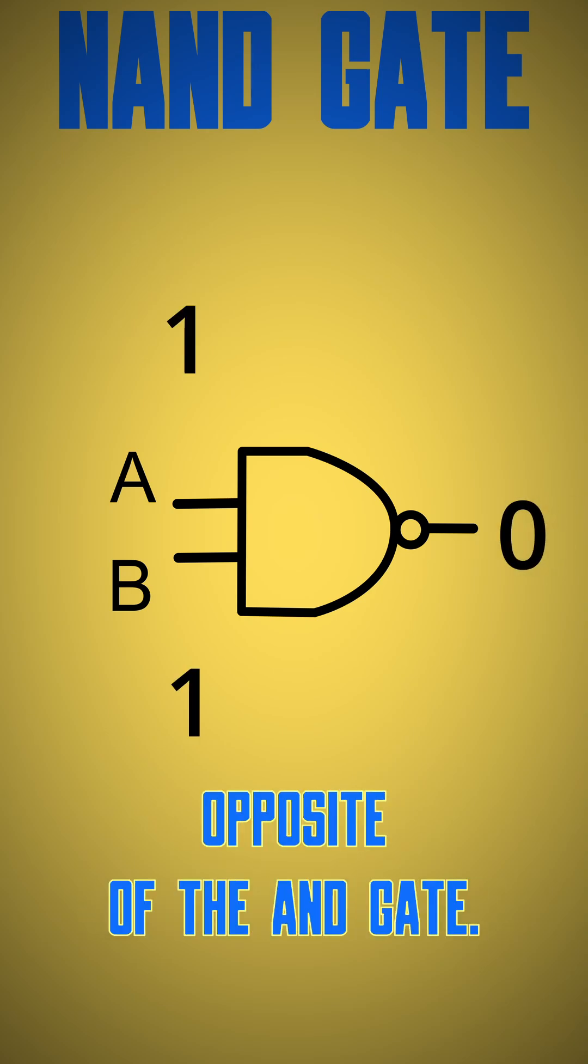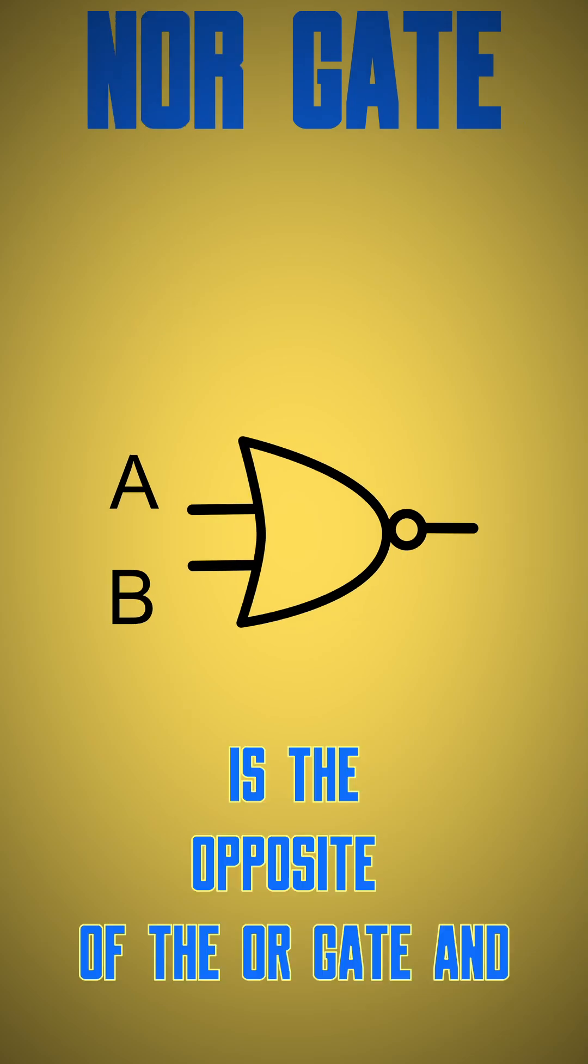NOR gate is the opposite of the OR gate and it's similar like NAND. The outputs become one only if all inputs are zero.